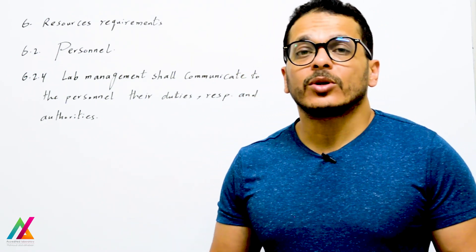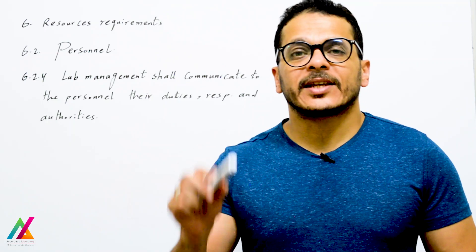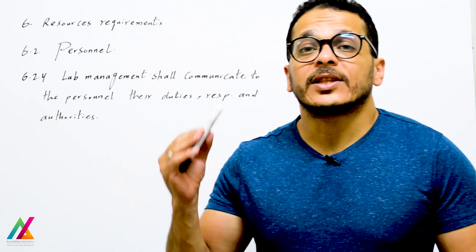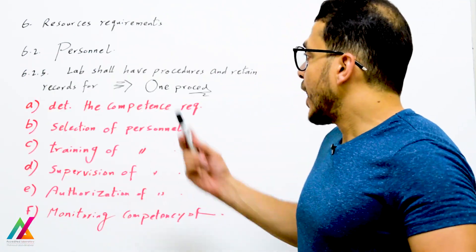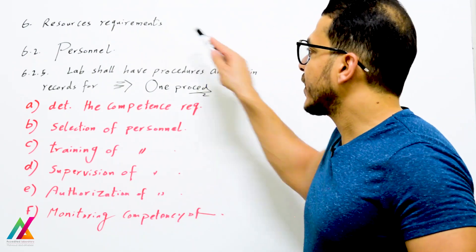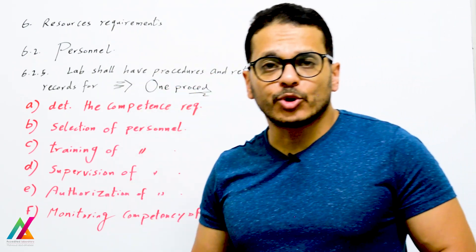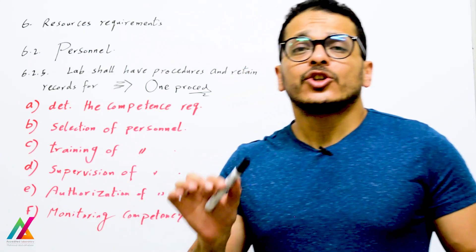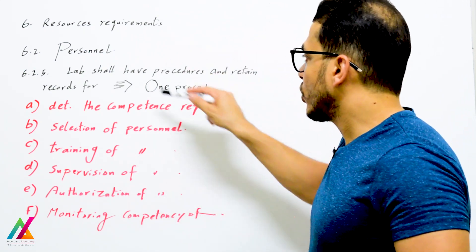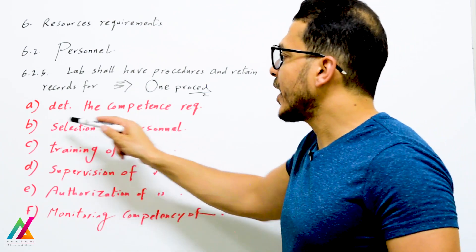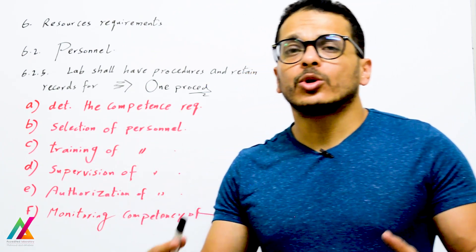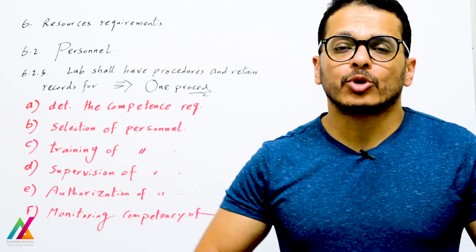Lab management shall communicate to personnel their duties, responsibilities, and authorities — this is done via the job description form, as discussed in the structural requirements. The lab shall also have procedures and retain records for these activities. Since the standard says 'shall have procedures,' you must prepare a procedure for this.